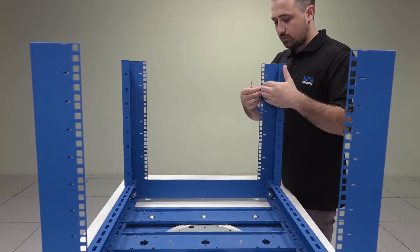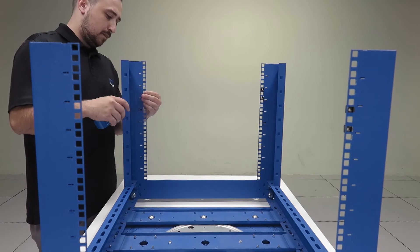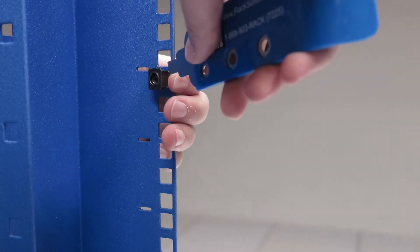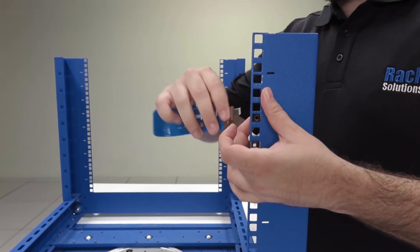If you're using a round or threaded hole rack, the process will be mostly the same except you won't use cage nuts. Insert one side of the cage nut prong into the rack, then grab your tool and push the other side in. You can do this with your hands, but it might possibly hurt.